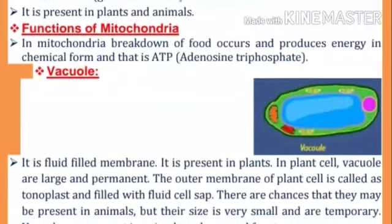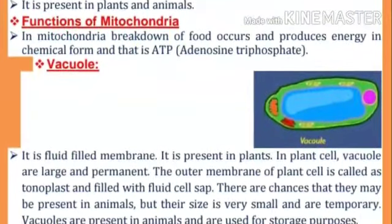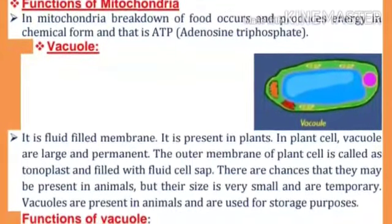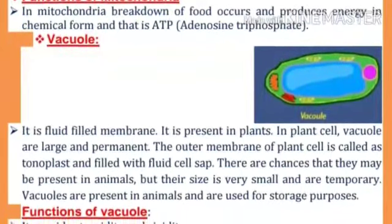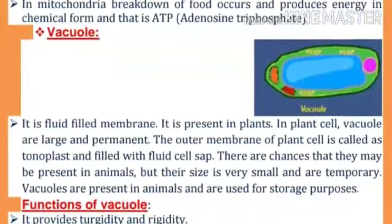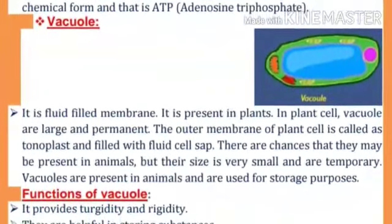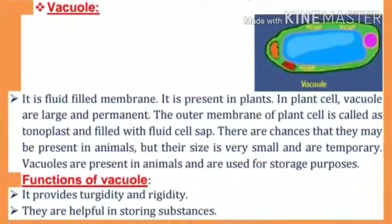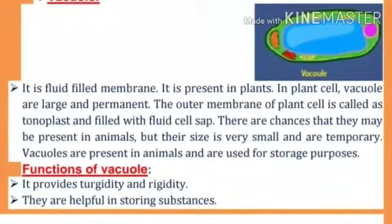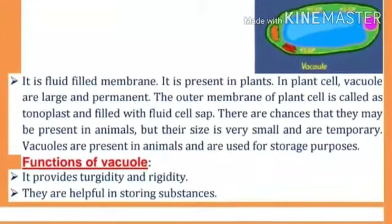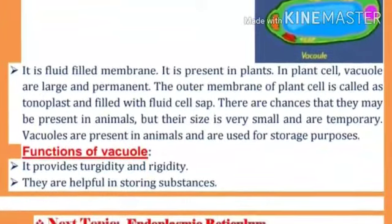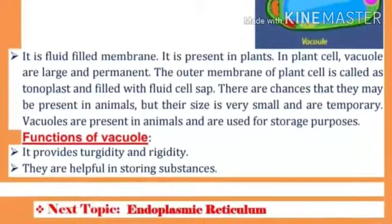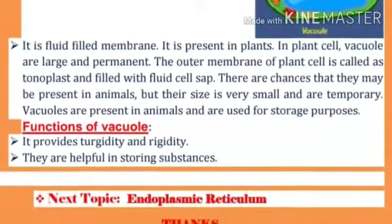Vacuole is a fluid-filled membrane structure. It is present in plants. In plant cells, vacuoles are large and permanent. The outer membrane of the plant cell vacuole is called the tonoplast and is filled with fluid called cell sap. In animals, vacuoles may be present but their size is very small and they are temporary. Vacuoles in animals are used for storage purposes. Functions of vacuoles: they provide turgidity and rigidity, and are helpful in storing substances.